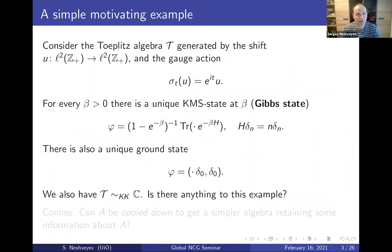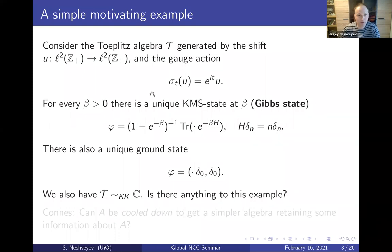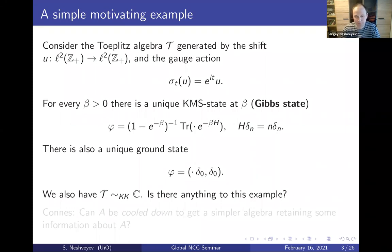The basic example to keep in mind for a large part of this talk is the Toeplitz algebra — the usual Toeplitz algebra generated by one isometry that shifts to the right. We consider the gauge action on this algebra, just rescaling the generator u. It's easy to check that for every beta larger than zero there is a unique KMS state, the so-called Gibbs state, explicitly given as a trace with some density matrix. When beta goes to infinity it converges to the ground state defined by the vacuum vector delta zero, and this is the unique ground state. We also know the Toeplitz algebra is KK-equivalent to the complex numbers.